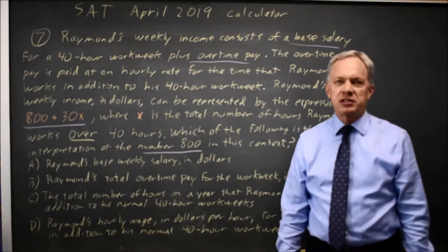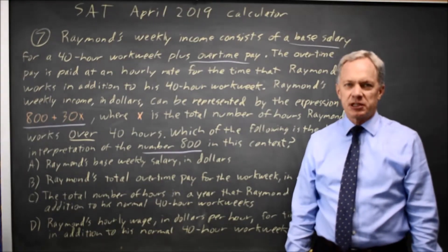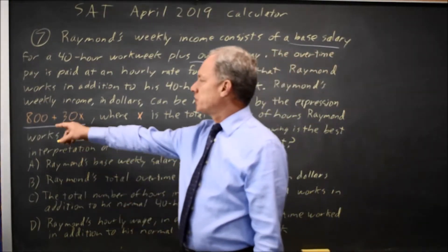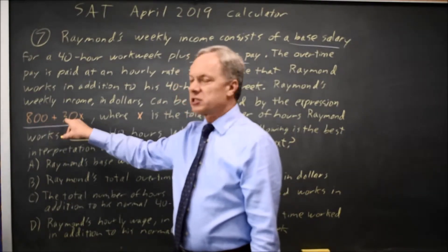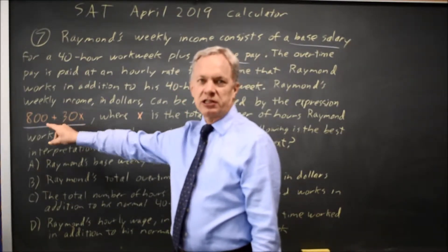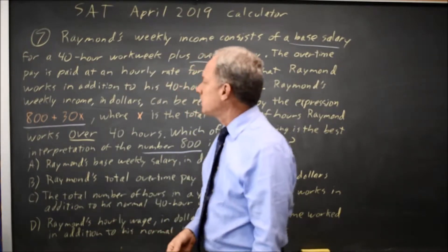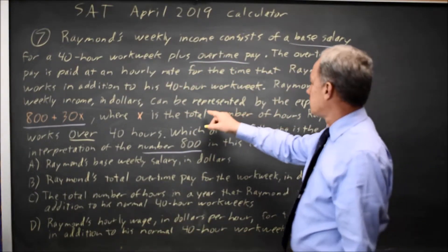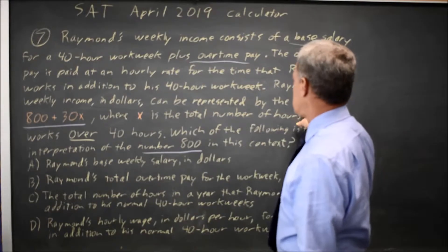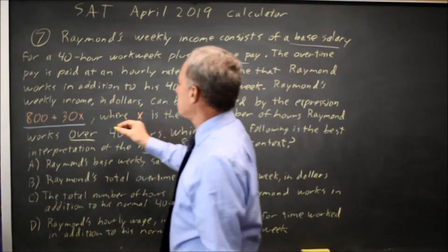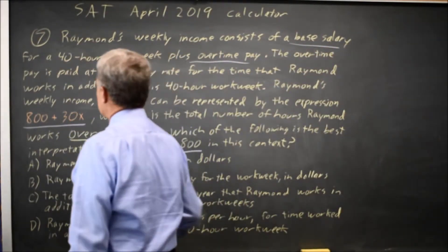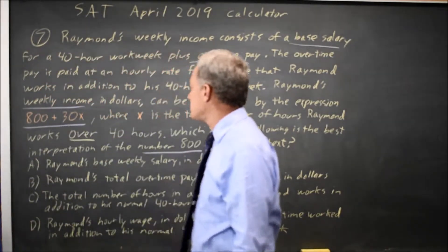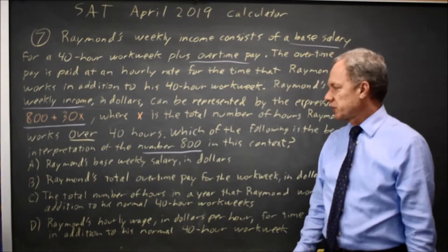The College Board often asks you to interpret a slope or intercept in context. In this case, we have an expression 800 plus 30X. The slope is 30, and the intercept is 800. The 800 is the value of weekly income when X is 0, where X is the overtime hours beyond 40.